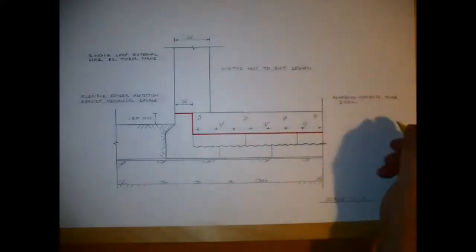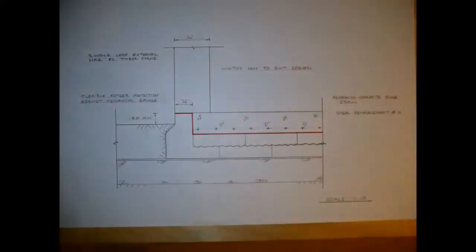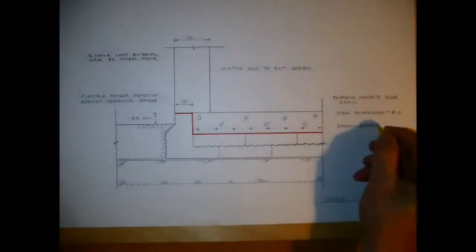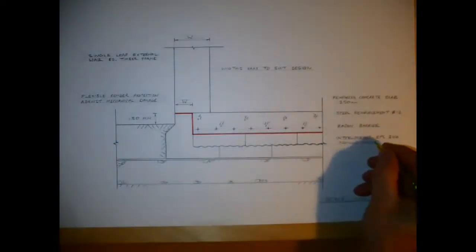Reinforced concrete slab which I have in is 250 millimeters, steel reinforcement bars of diameter 12, radon barrier, interlocking EPS, the 300, so it's 300 millimeters of insulation, so it's in 150 millimeter layers, two layers.